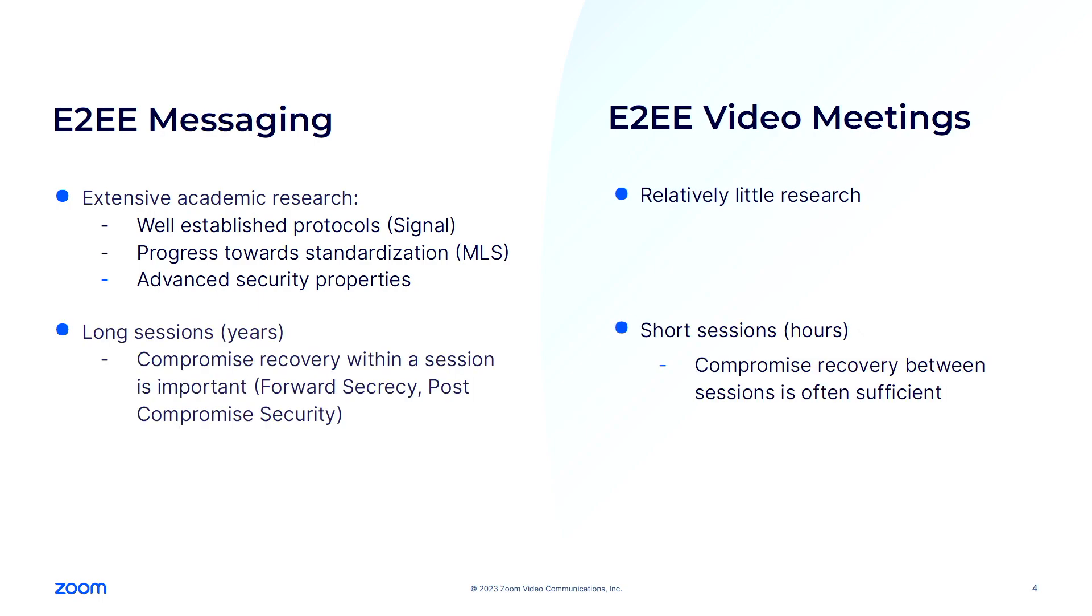I will argue that the two fields are slightly different and so more analysis on the meeting side is necessary. The first difference is the length of a session. A chat conversation can last even for years, while typically video meetings are only up to a few hours long. So it is important to limit the damage when compromise happens during a messaging session. I'm talking about properties such as forward secrecy and post-compromised security.